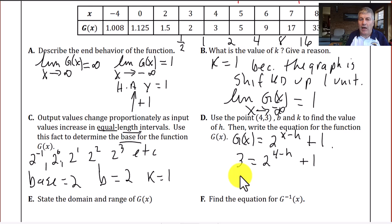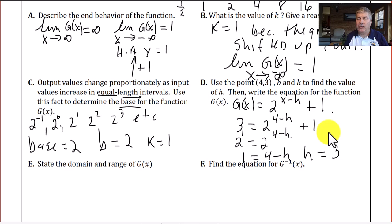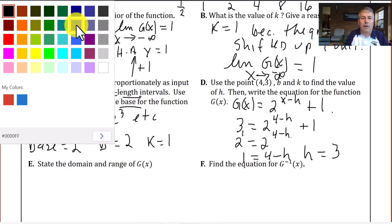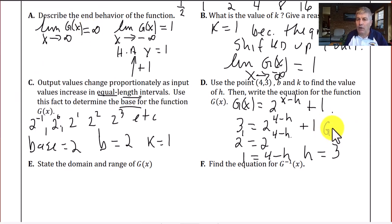So I subtract 1 from both sides, 3 minus 1 is 2, and I get 2 to the 4 minus h. So 2 to the 1st equals 2 to the 4 minus h, which means 1 has to equal 4 minus h. So h has to equal 3. Since h is equal to 3, now I know that my function in the end here, because I have all my values, this is going to be a little scrunched, but g of x equals 2 to the x minus 3 plus 1 is our function g of x.